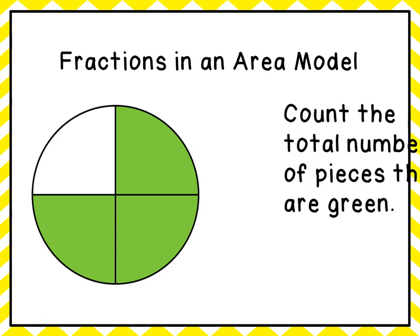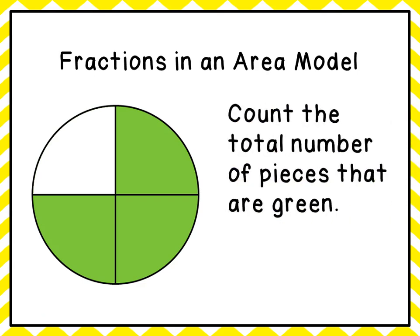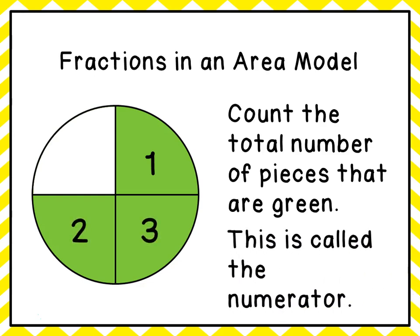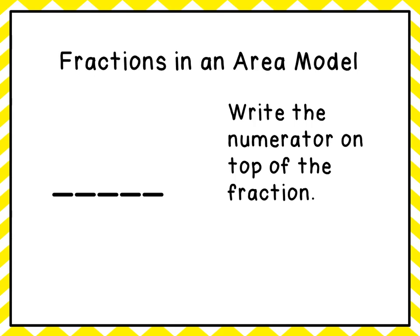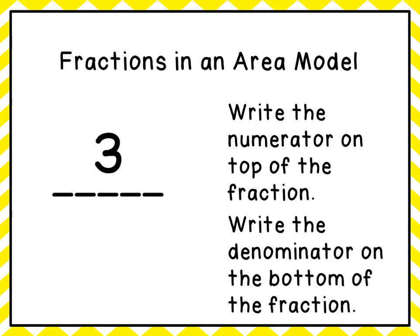The second thing that we're going to do is count the total number of pieces that are green. In this case they're green — they can be anything, they can be blue, they can be just shaded in. So let's go ahead and count those pieces: one, two, three. And this number is called the numerator. Now we're going to write the numerator on top of the fraction — that's the pieces that were green, and that's going to be three. And then we're going to write the denominator on the bottom of the fraction — that's how many pieces we had all together, and that number was four. So our fraction here is three fourths.